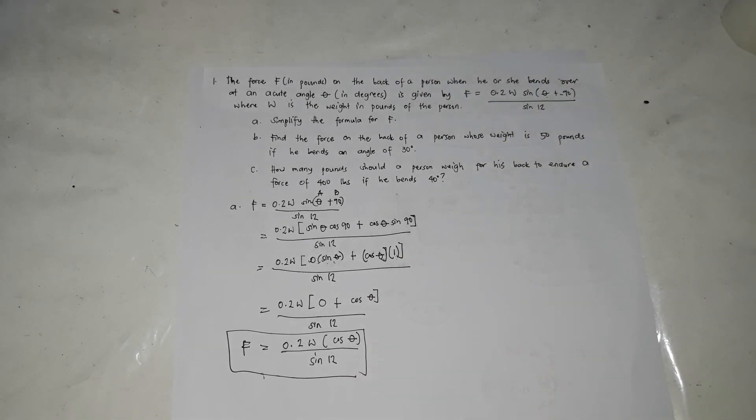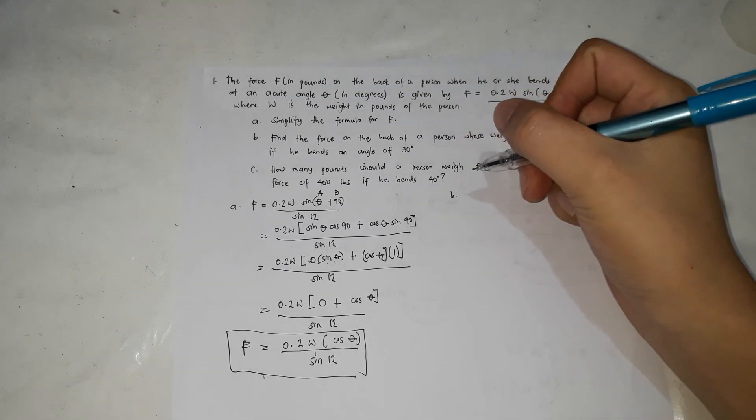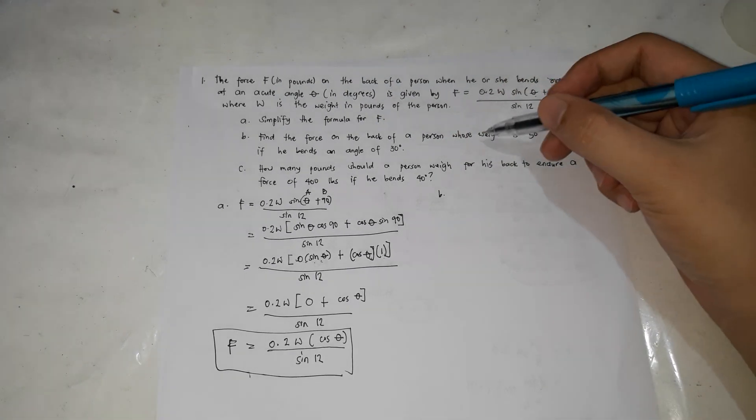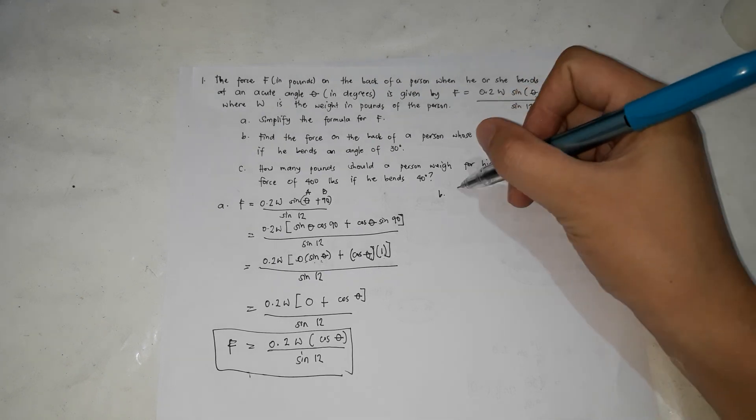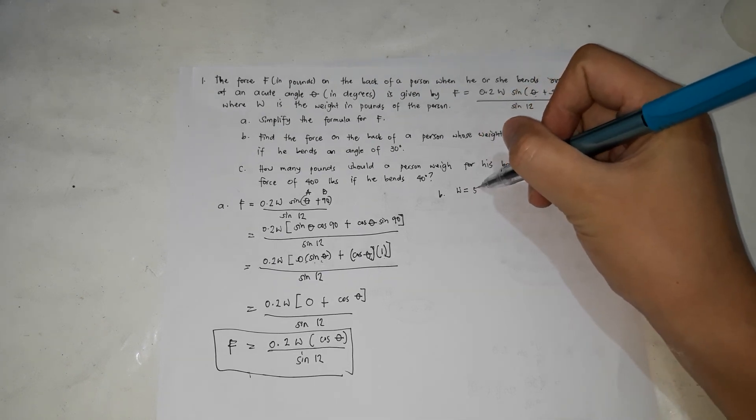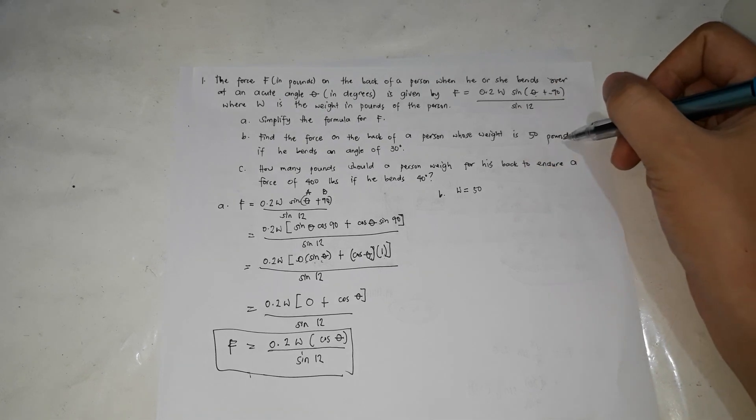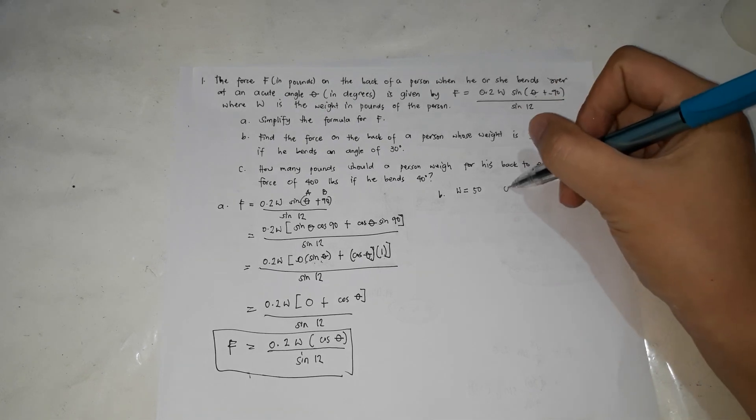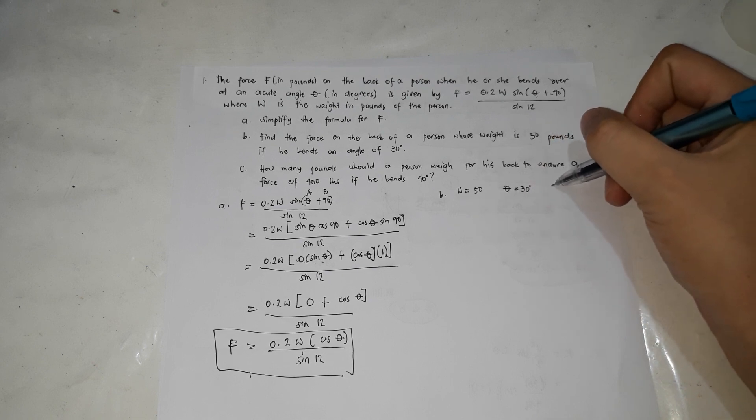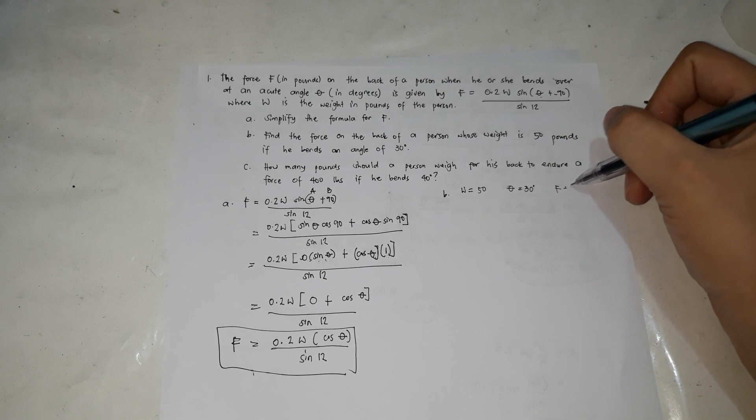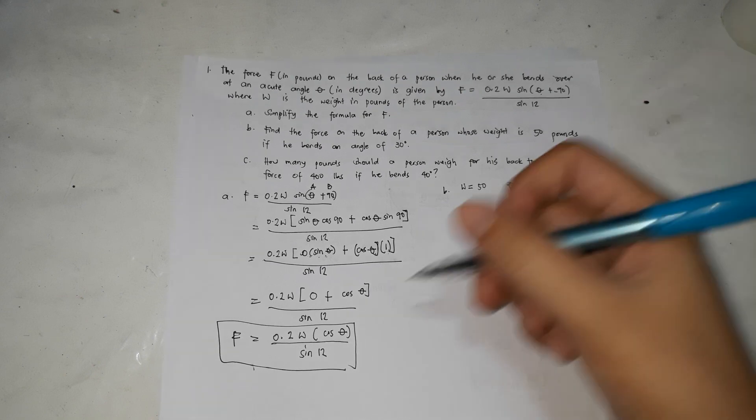Letter B: find the force on the back of a person whose weight is 50 pounds if he bends an angle of 30 degrees. So given: weight 50 pounds, angle is 30 degrees. We're looking for the force.